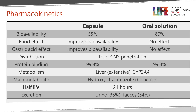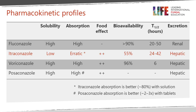With lower doses, itraconazole's half-life is 21 hours, but it's longer with higher doses. Excretion is through the urine and faeces via its metabolites. Key PK parameters include low solubility, absorption that varies a lot from patient to patient, the important food effect with capsules but not the solution, and this half-life varying depending on the dose.